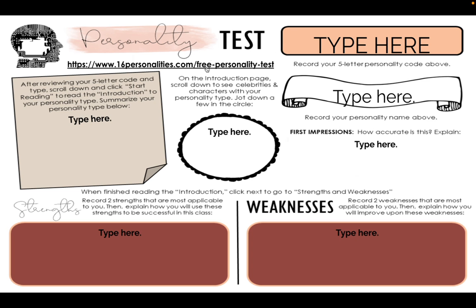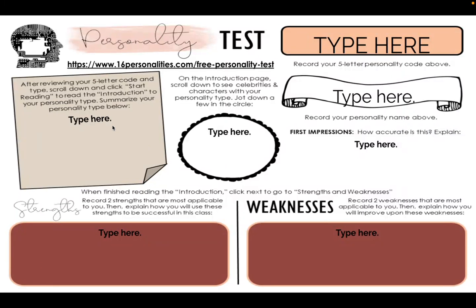The test is linked in the slides and also on Canvas. After you take the test, fill in the information on your slide — your five-letter personality code up top, and the personality name. Scroll down and click "Start Reading" to look at the introduction of your type and summarize it. Then scroll down to Celebrities and Characters and jot down a couple listed there. Also note your first impressions — how accurate does this feel?